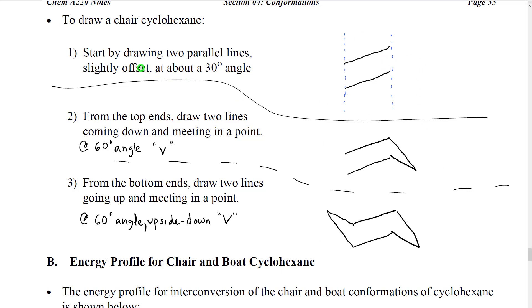What we're going to do is we're going to draw two parallel lines, slightly offset from each other at about a 30 degree angle. So what I mean by that is imagine two imaginary dotted lines going perfectly straight up and down, perfectly parallel to the edge of the paper.